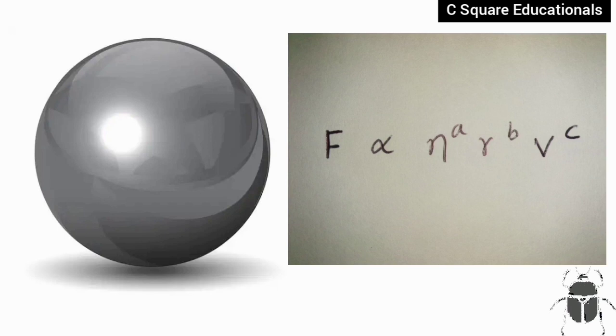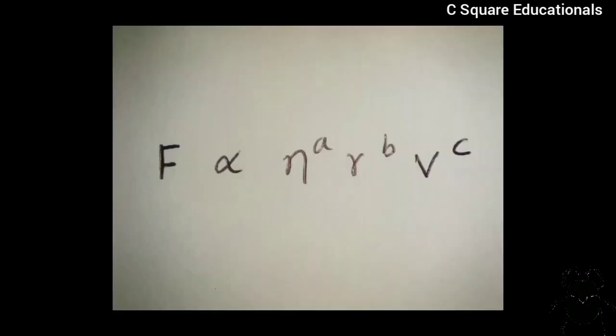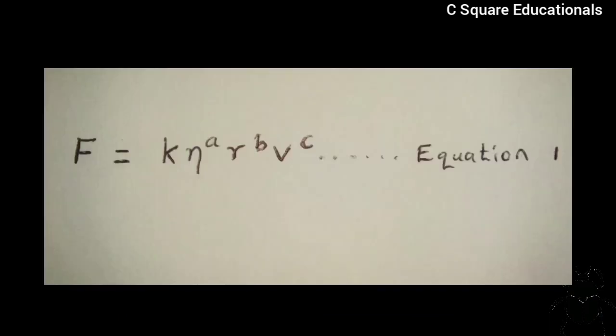Mathematically, we can represent this as F to be proportional to η^A, R^B, V^C. Let us find the values of A, B, and C. So, substituting the proportionality sign with an equality sign, we get F is equivalent to K η^A R^B V^C. Notice that we have introduced the proportionality constant because we have removed our proportionality sign.